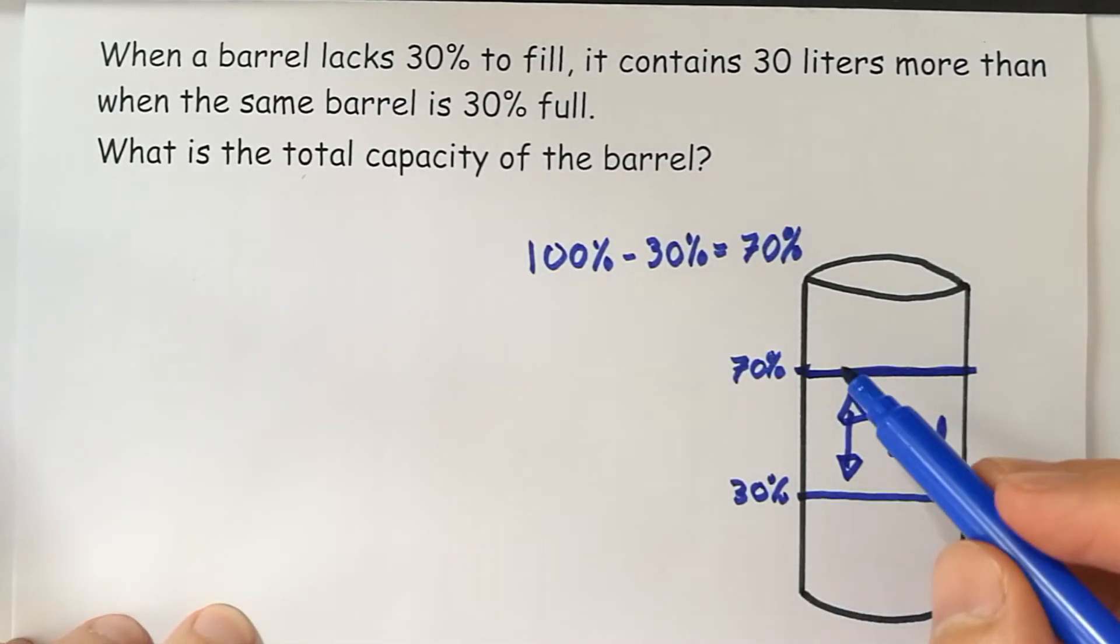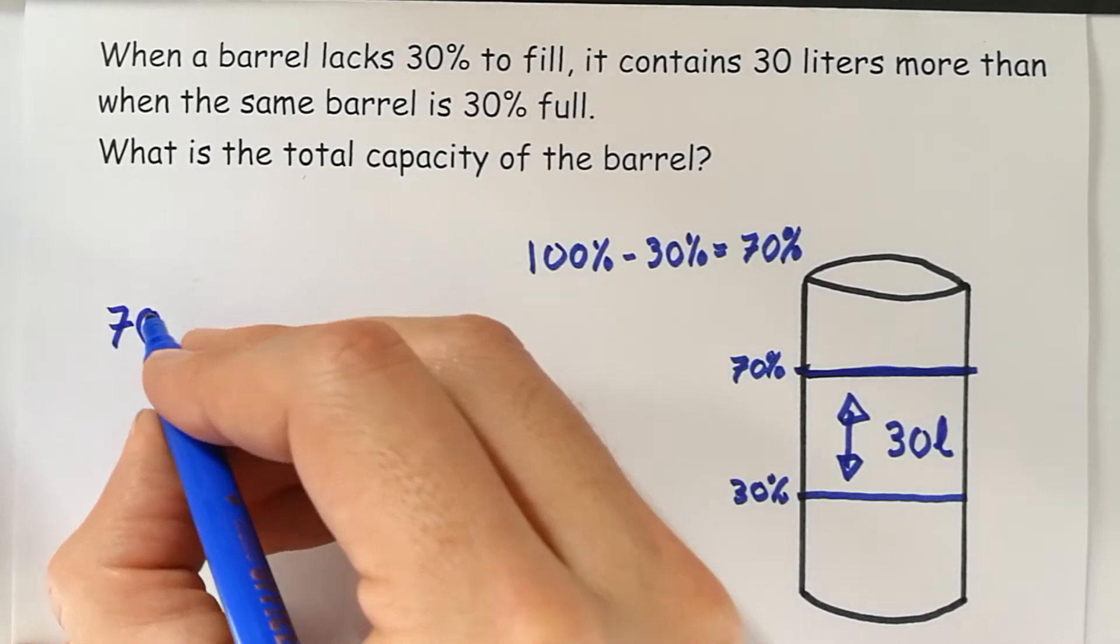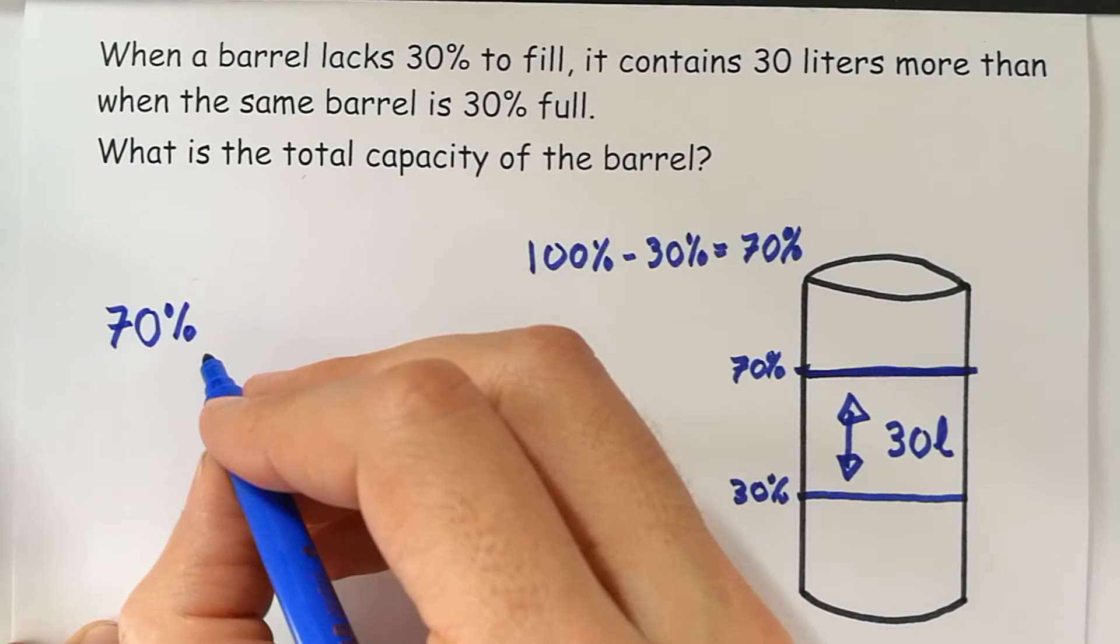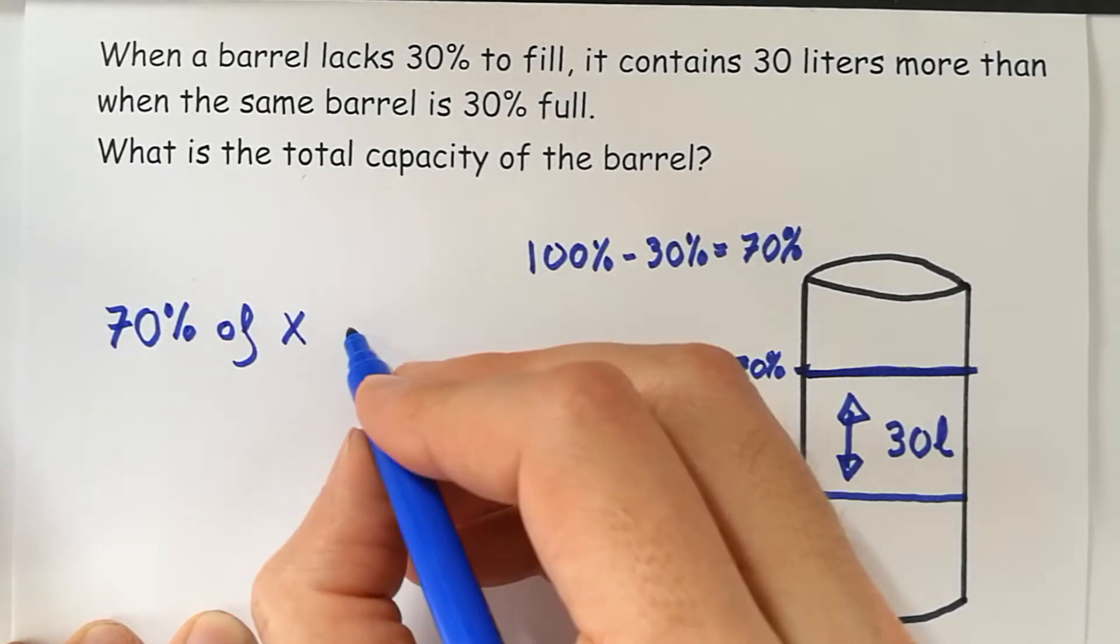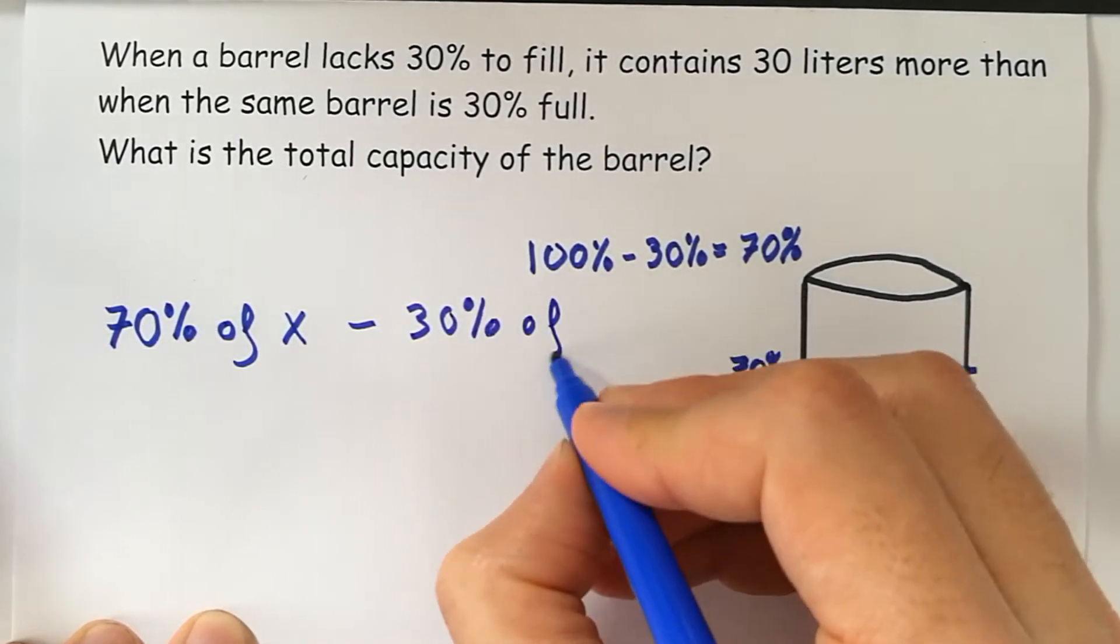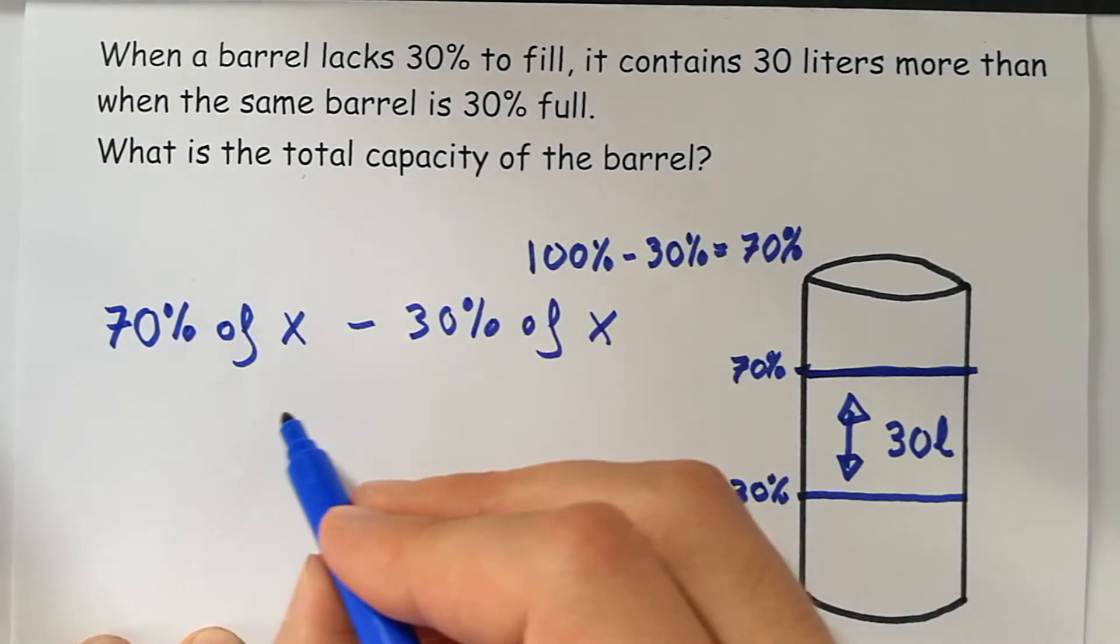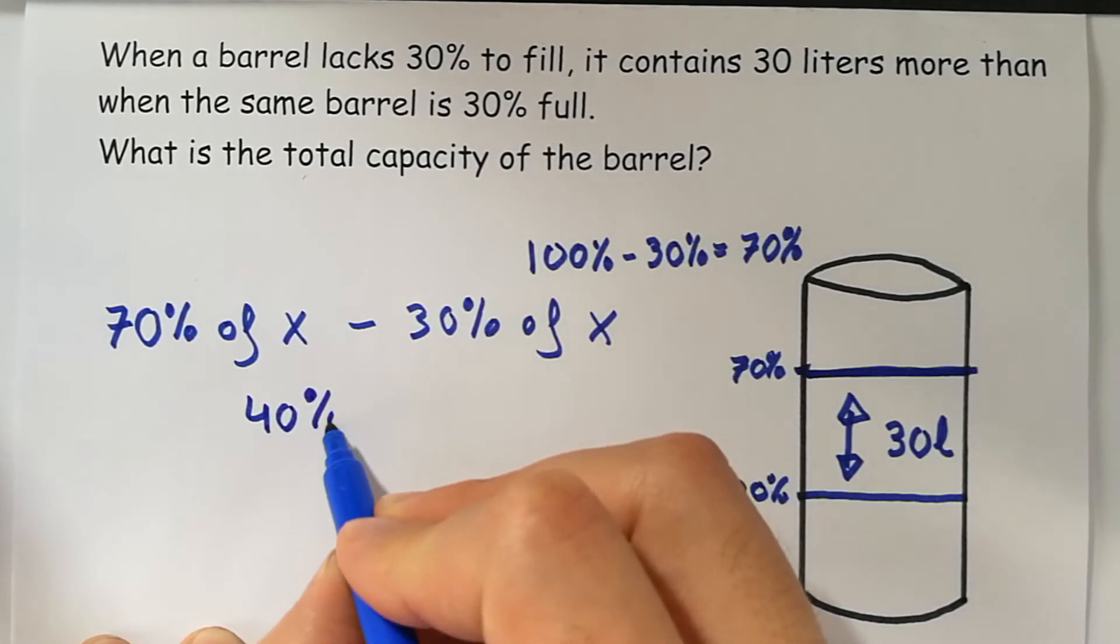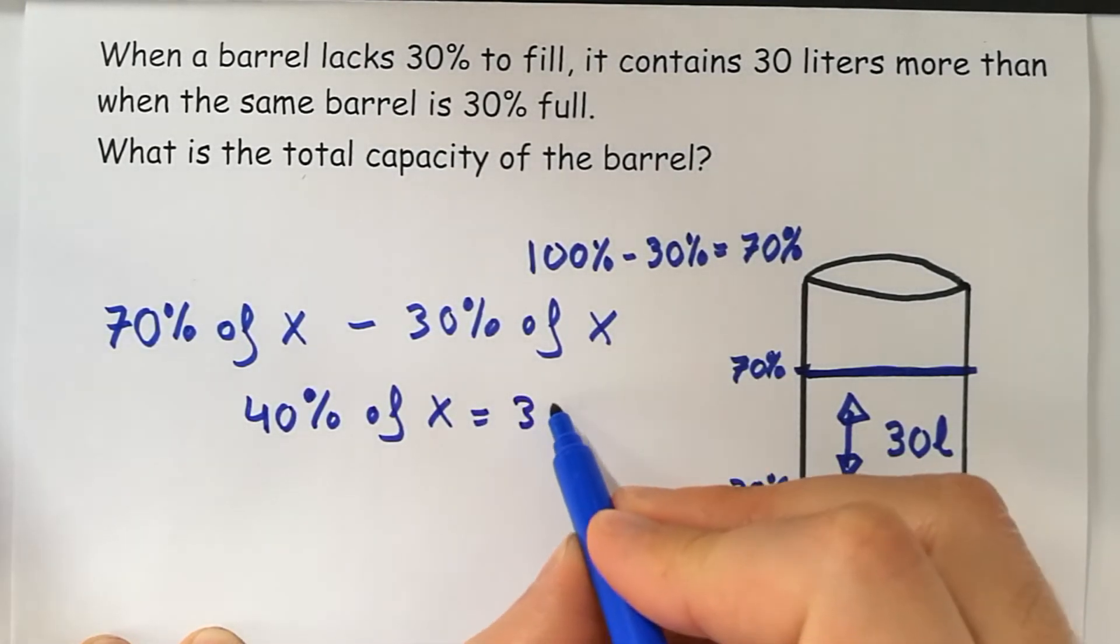Now we may say that the difference between the 70% of the total capacity minus 30% of the total capacity is 30 liters. We know that the 40% of the total capacity is 30 liters.